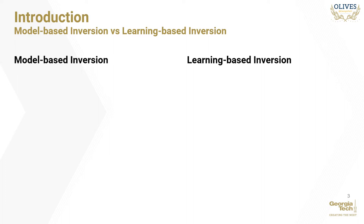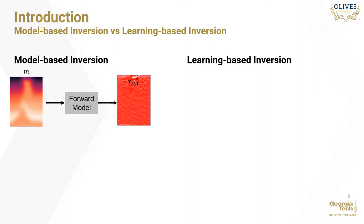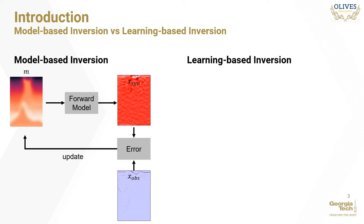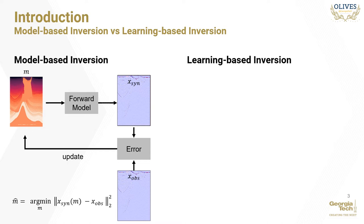Inversion may either be done in a deterministic fashion, also called model-based inversion, or it may be learned in a supervised fashion from training samples in what is called learning-based inversion. Model-based inversion begins with a smooth model of the subsurface physical rock parameters. It is then forward modeled to produce a synthetic seismic. The error between the synthetic seismic and the observed seismic is computed and used to update the initial model's parameters. This process is repeated until the synthetic and observed seismic data match to an acceptable degree, summarized as minimizing the L2 norm squared difference between synthetic and observed seismic over the space of model parameters M to find the optimal model M-hat.